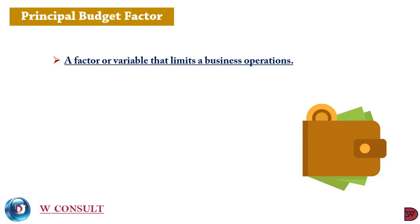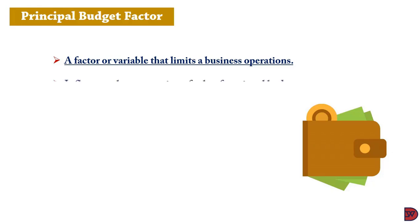Another business might have a sales potential of 80,000 units per month but only has the capacity to produce 50,000 due to difficulty in accessing the right materials, specialized labor, or required hours. In that situation, the principal budget factor will be production. The principal budget factor influences all other functional areas — if sales is 50,000 and capacity is 100,000, production must be reduced to match sales. The principal budget factor is always prepared first because it sets the tone.